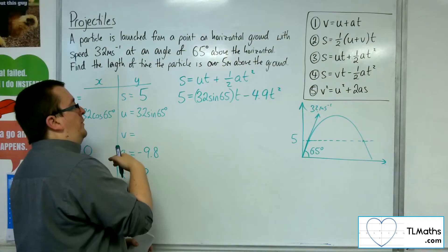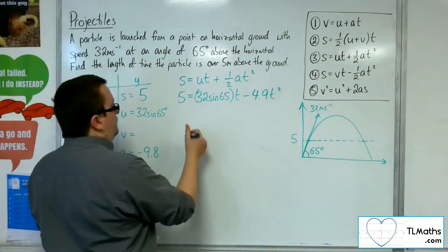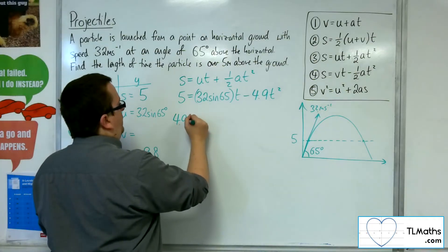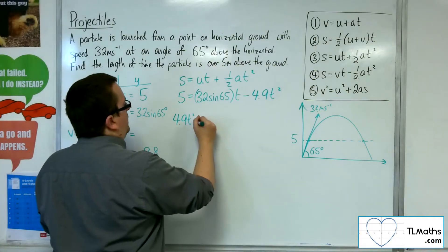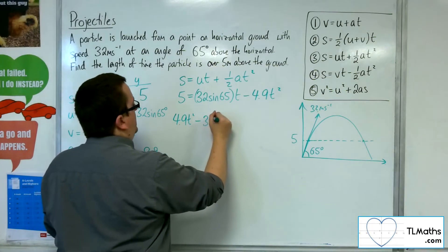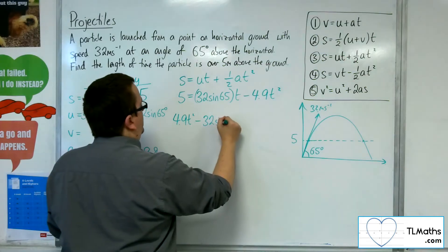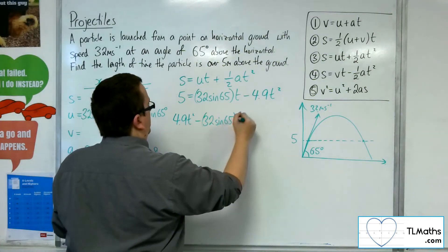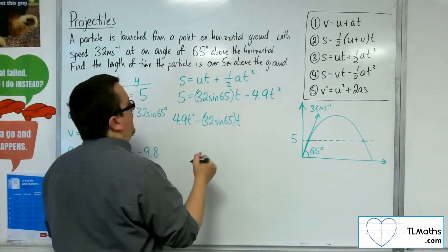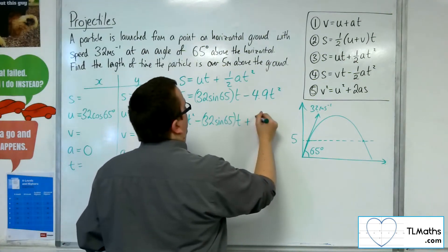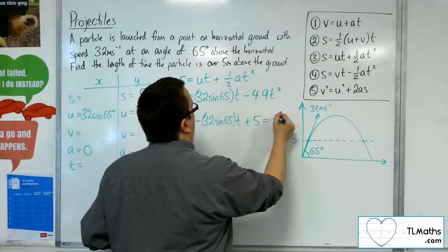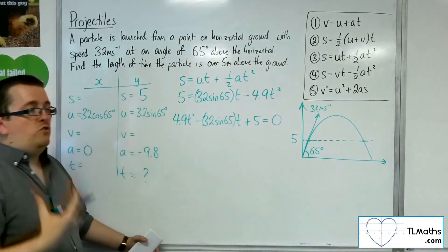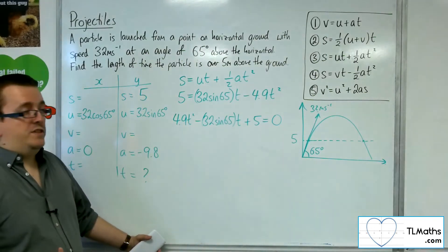Let's move everything onto one side of the equation. So we've got 4.9T² minus 32 sine 65 T plus 5 equals 0. So we've got a quadratic equation for T.